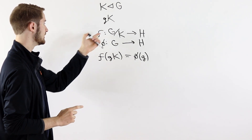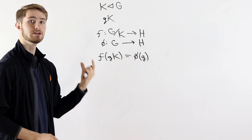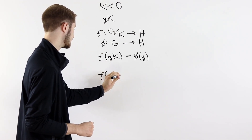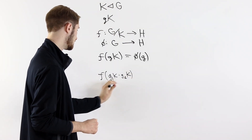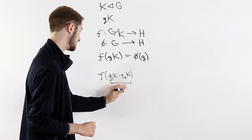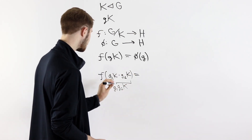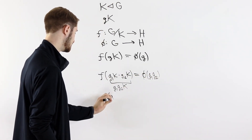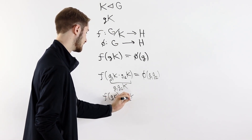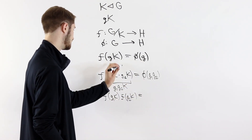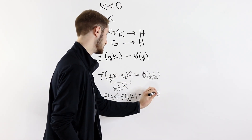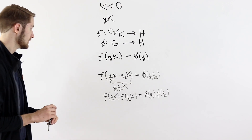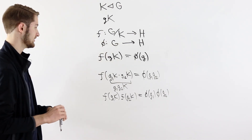Now, if we define F in this way and phi is a group homomorphism, then F defined like this is automatically also a group homomorphism. If we look at F of G1K times G2K, where G1 and G2 are elements of the group, then G1K times G2K equals G1G2K — that's how multiplication in the quotient group is defined. By definition, F of G1G2K equals phi of G1G2. On the other hand, F of G1K times F of G2K equals phi of G1 times phi of G2. Because phi is a group homomorphism, phi of G1G2 equals phi of G1 times phi of G2, so these expressions are equal and F is a group homomorphism.